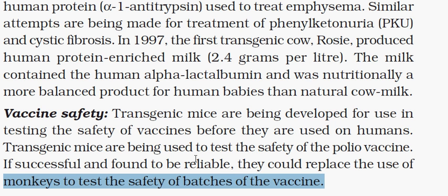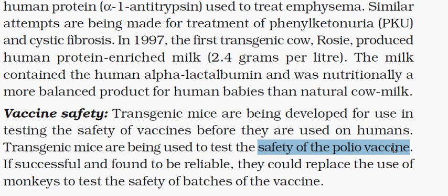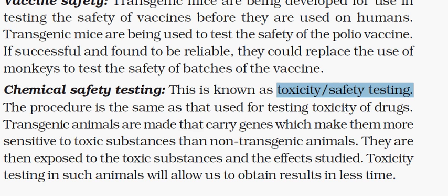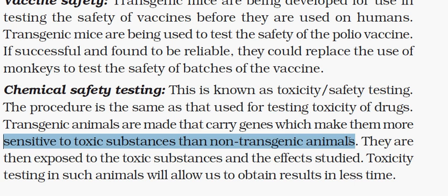Chemical safety testing, also known as toxicity or safety testing, follows a similar process to testing the toxicity of drugs and vaccines. Transgenic mice are created which carry genes that make them more sensitive to toxic substances than non-transgenic animals. They are then exposed to the toxic substance, and the effect is studied. Toxicity testing in such animals allows us to obtain results in less time. These are the reasons behind using transgenic animals.